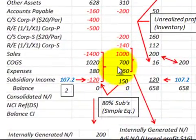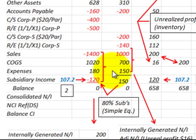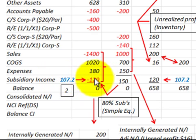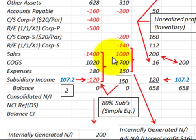Here we're going to be looking at the sophisticated equity method, concentrating on the subsidiary's income that the parent would record. We're going to be comparing the sophisticated equity method versus the simple equity method, since most people may be familiar with the simple equity method.